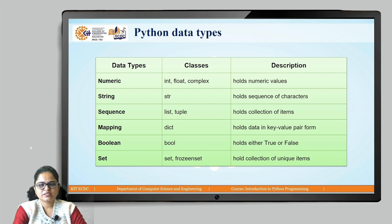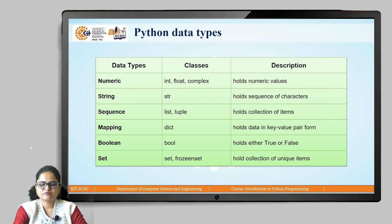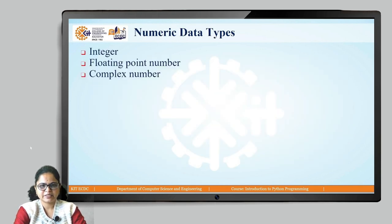Next is the mapping data type, where dictionary is the mapping data type which holds data in key-value pair form. Next is the boolean data type, which holds the value either True or False, defined by the bool data type. Set is the last data type in Python, which holds a collection of items, but those items should be unique — set and frozenset are the set data types.